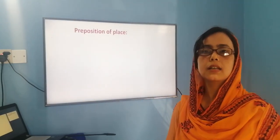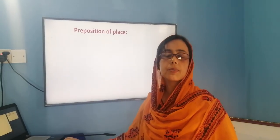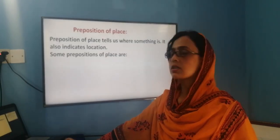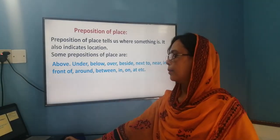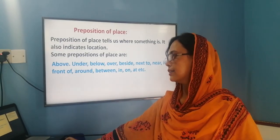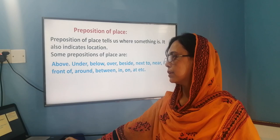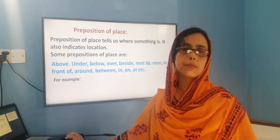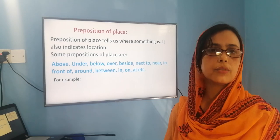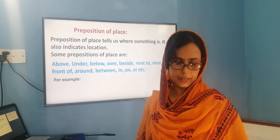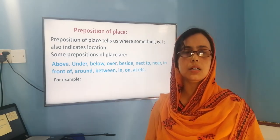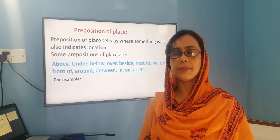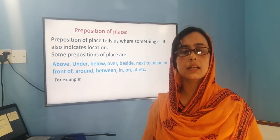Some prepositions of place include: above, below, under, over, beside, near, to, in front of, around, between, in, on, at, and so on. We are going to focus on the uses of 'at,' 'on,' and 'in.' I know many of you have difficulty with these words. I have a solution — by using a triangle or a pyramid. 'At' is like the tip of the triangle: a very specific, narrow point. 'On' is a little bit broader, and 'in' is the largest — an enclosed space.